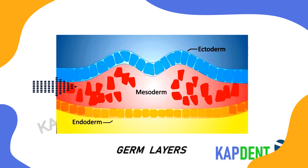These are arranged in a sandwich or disc-like manner. Thus, the development of face and oral cavity begins by the fourth week of intrauterine life. Remember, initially in the cephalic portion of this disc, the pericardial bar responsible for the formation of the heart lies ahead of the pre-cordial plate, which means the heart would lie above our mouth.